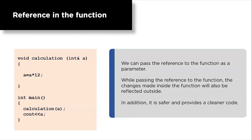Now, references in functions. We can pass a reference to a function as a parameter. It is similar to passing pointers to a function but it is safer. While passing the reference, changes made inside the function will also be reflected outside, because the passed reference accesses the actual argument. So changes done to the parameter inside the function affect the arguments. It also provides cleaner code. To pass a value as reference, simply change the function parameter to a reference type, for example 'int& a'.